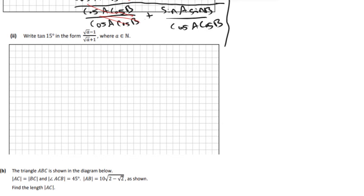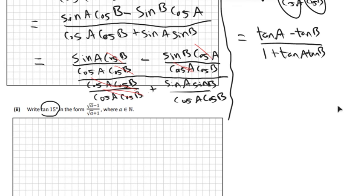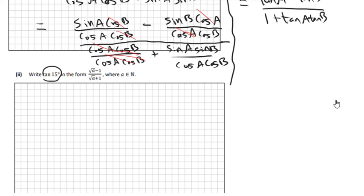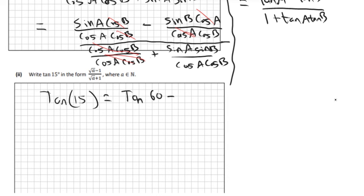So the next part: write tan of 15 degrees. There's a clue from the first part — you're going to use that rule. There's nothing really for tan of 15 in your log tables, so we're going to write tan 15 as tan of 60 minus 45, because 15 is just 60 take away 45. Then we can use that rule, and we have values for tan 60 and tan 45 that will make it easier.